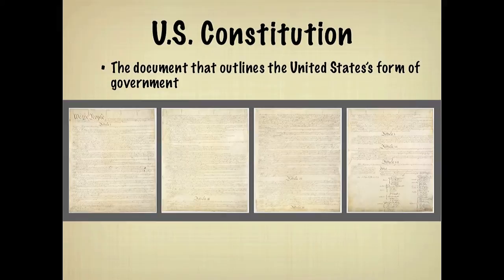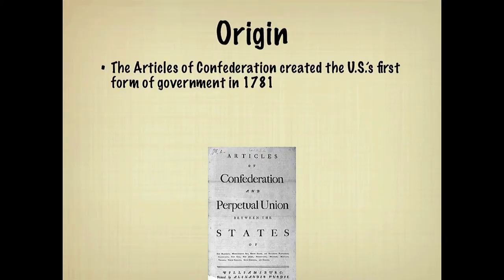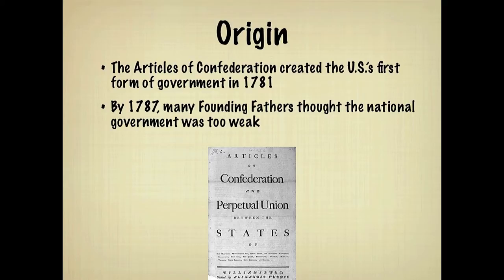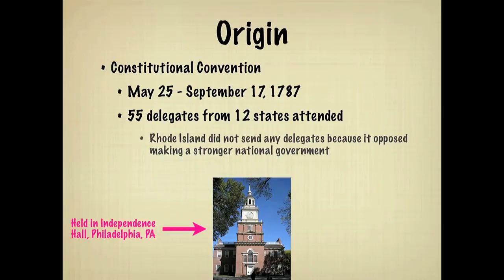A document called the Articles of Confederation created the U.S.'s first form of government in 1781. By 1787, many founding fathers thought the national government was too weak under the Articles. Therefore, 55 delegates from 12 states attended the Constitutional Convention in Philadelphia to revise the Articles of Confederation.